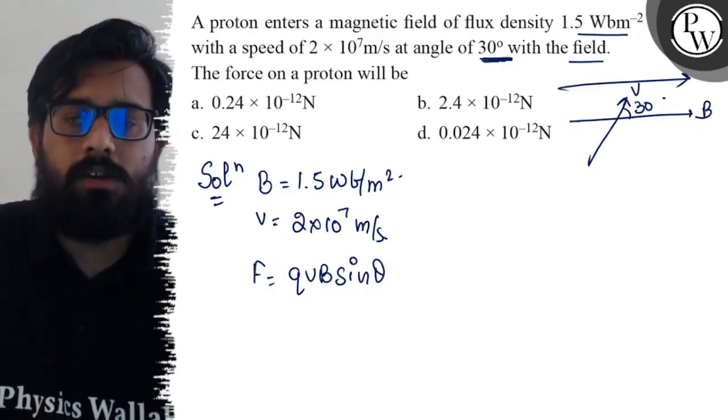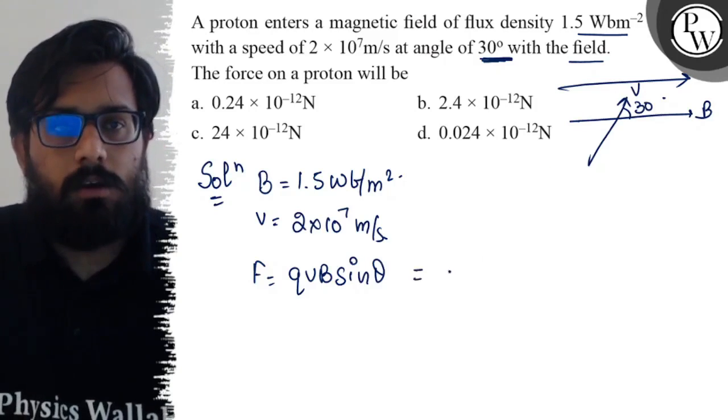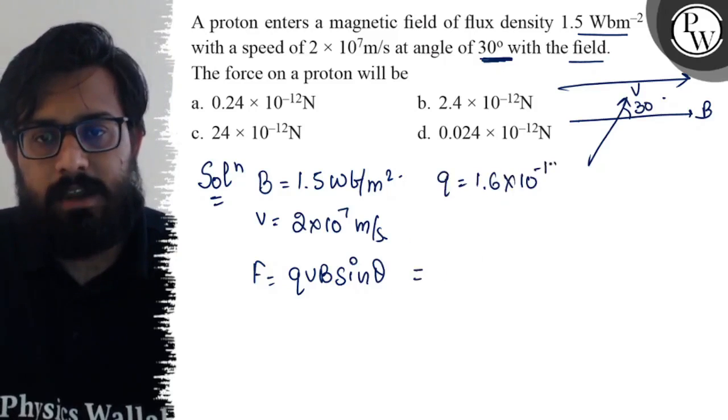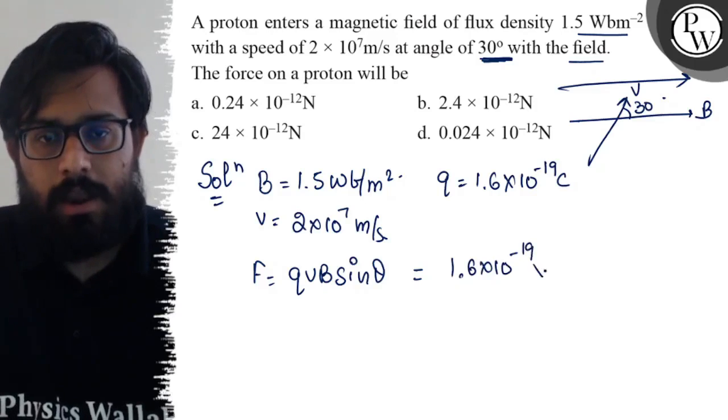The charge of the proton is 1.6 × 10^-19 Coulomb, so F = 1.6 × 10^-19 into velocity...